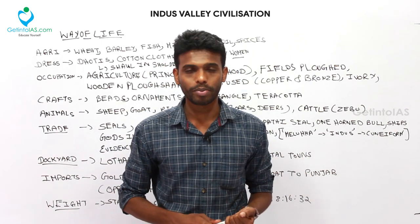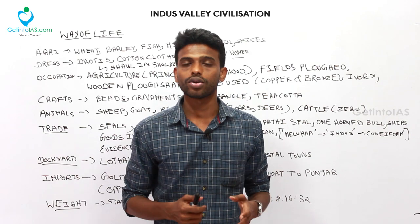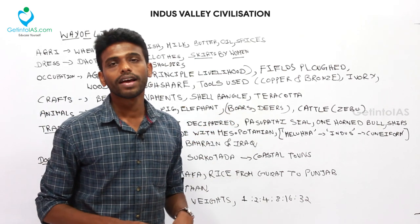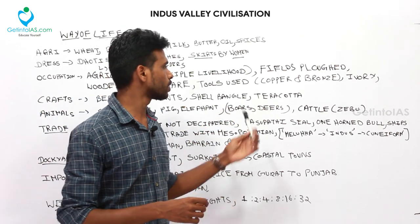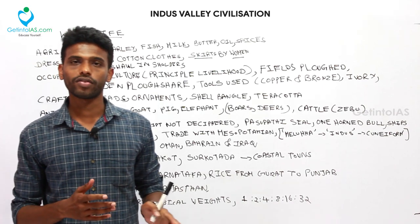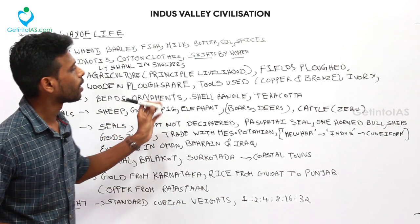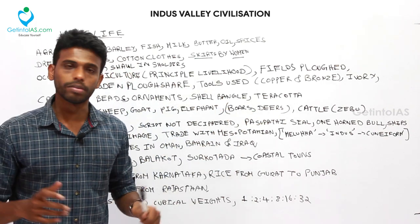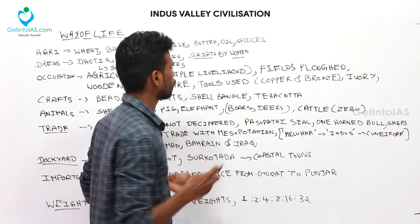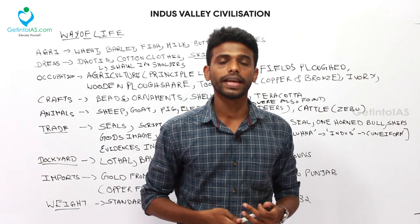Craft manufacturing was an important activity. People made beads, ornaments, shell bangles, and terracotta figurines — terracotta being a clay mixture used to make figures. Regarding animal domestication, which began at the end of the Mesolithic period: sheep, goat, pig, elephant, and cattle were the principal domesticated animals. Cattle was called 'zebu' in Harappan terms. Evidence of boars and deer were also found.